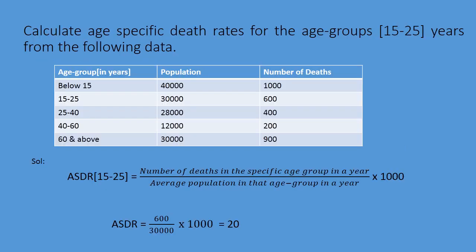Let us take a problem. We need to find the age specific death rate for the age group 15 to 25 years. In the table we have been given age in years, population, and number of deaths. Applying the formula: ASDR for 15 to 25 years is equal to the number of deaths occurring in the age group 15 to 25 years, divided by the average population in the age group 15 to 25 years, multiplied by 1000.